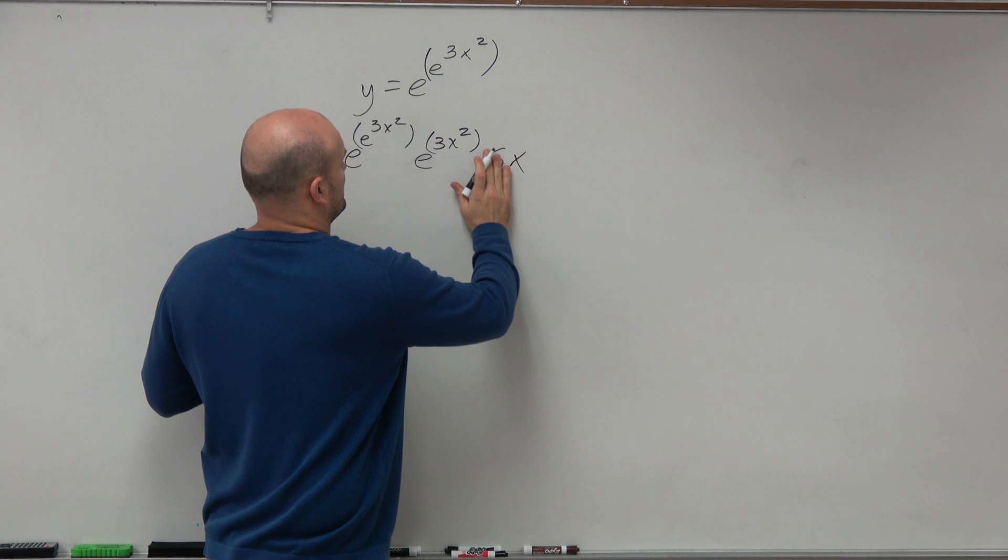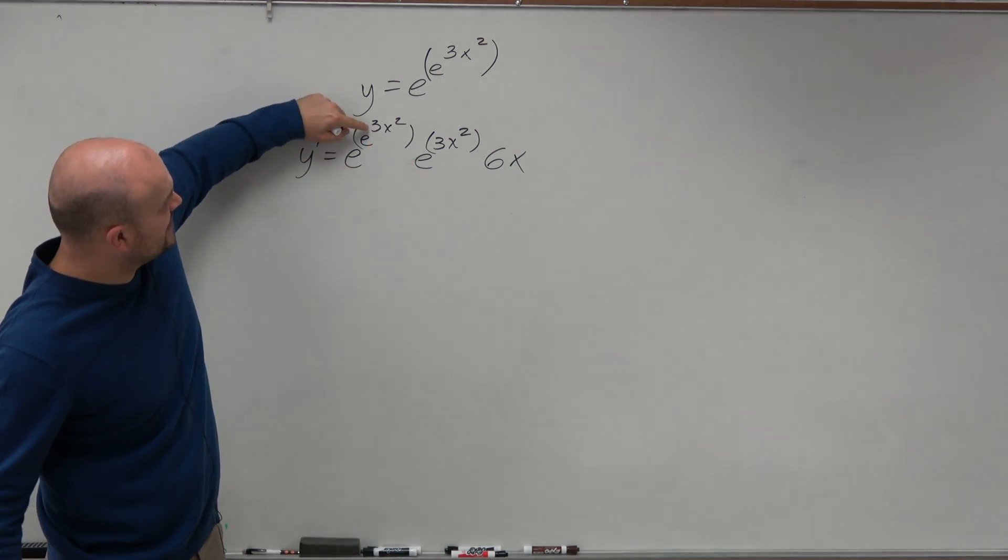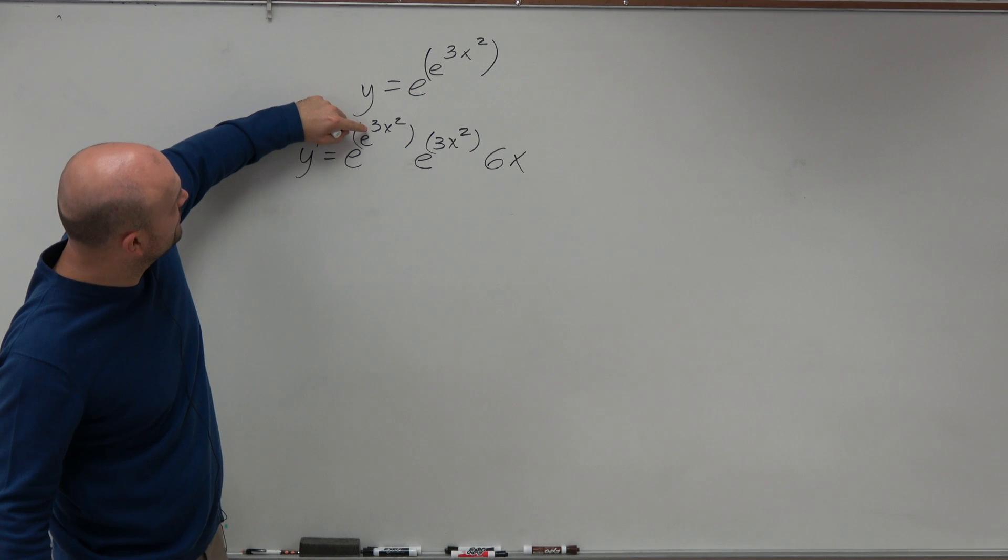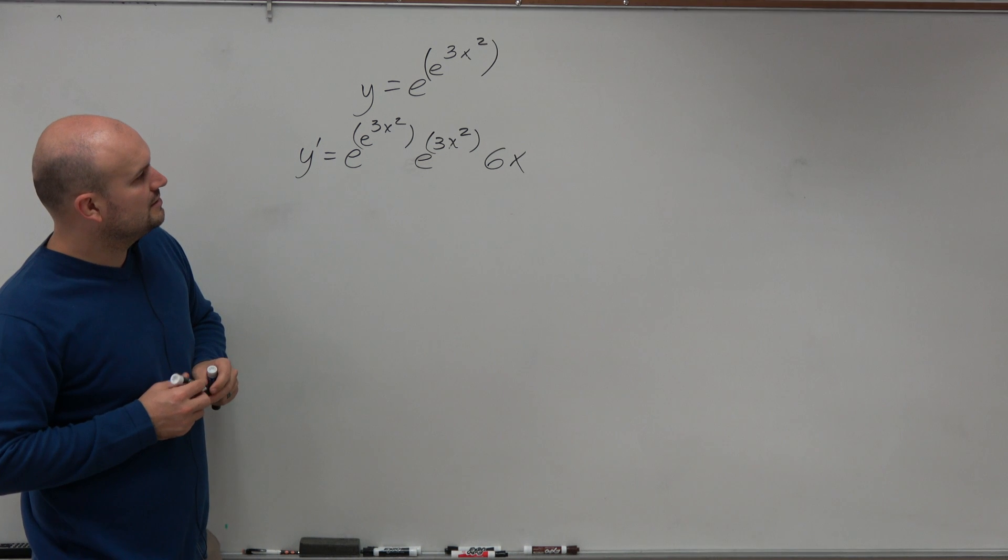Oh, sorry. e to the e to the 3x. So then you're taking the derivative of this, which is going to be e to the 3x times the derivative right there, 6x.